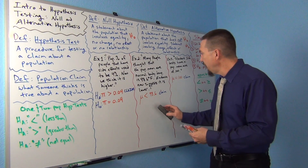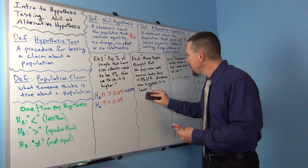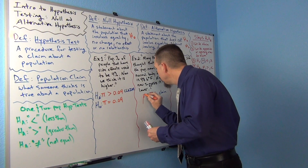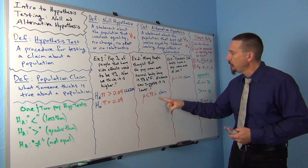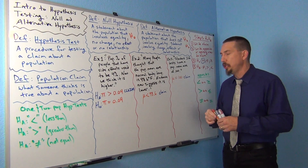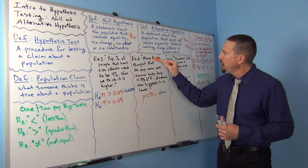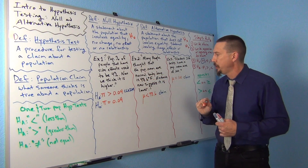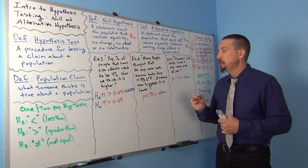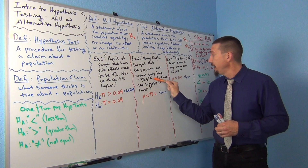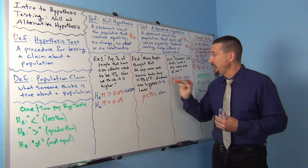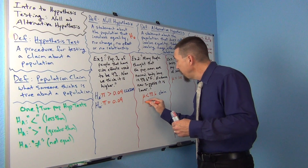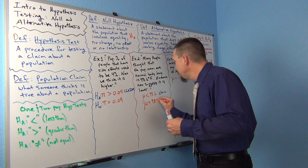We have mu is less than 98.6. That was the claim — what they think is true, that it's actually lower than 98.6. But what was the opposing view? Many people thought that the population mean average normal body temperature is 98.6. They never said they thought it was higher; they just thought it was equal to 98.6. That sounds like the opposing view is equal to. So I'm going to write mu is equal to 98.6.